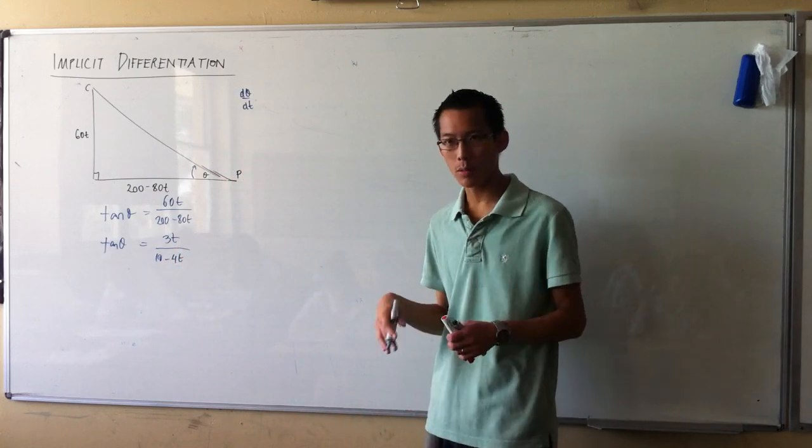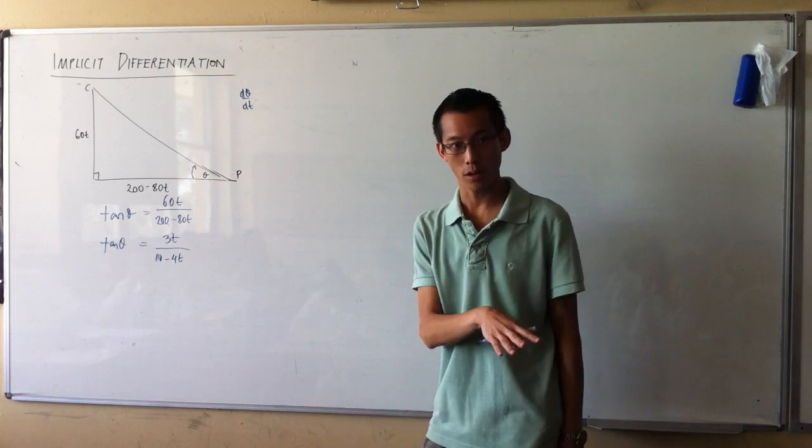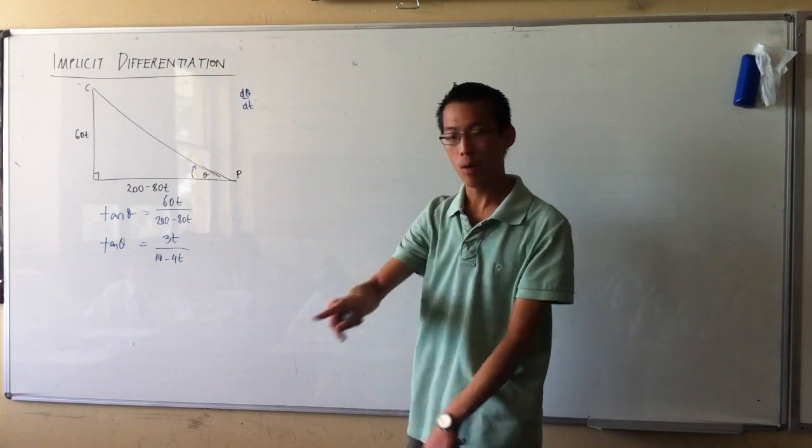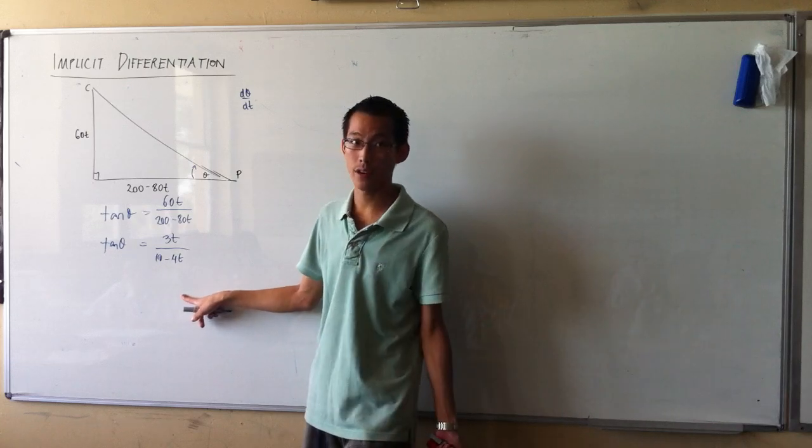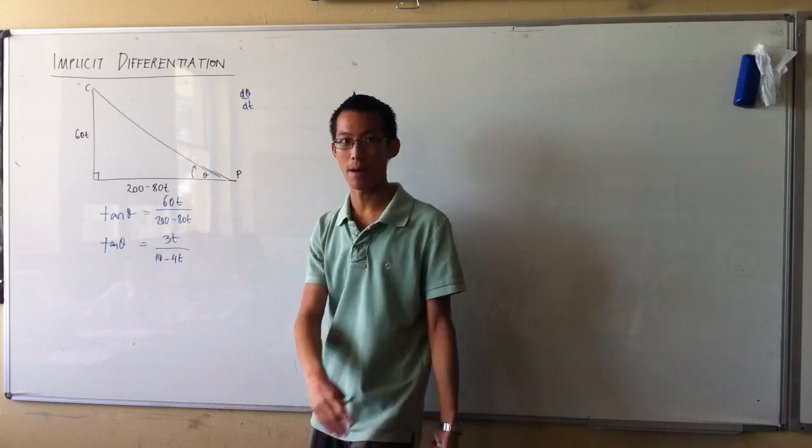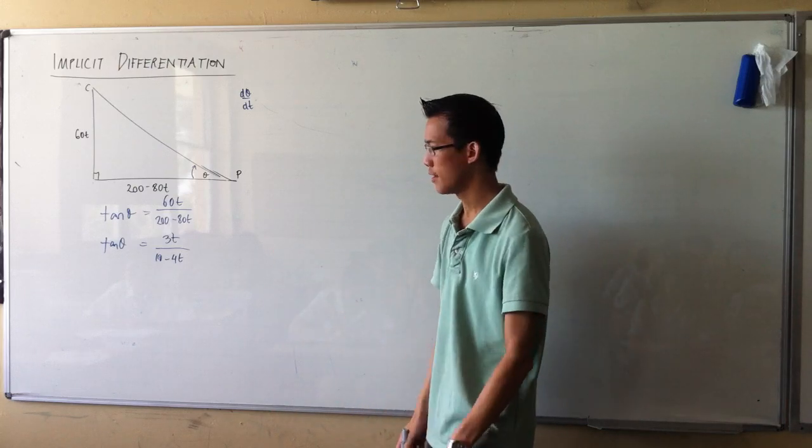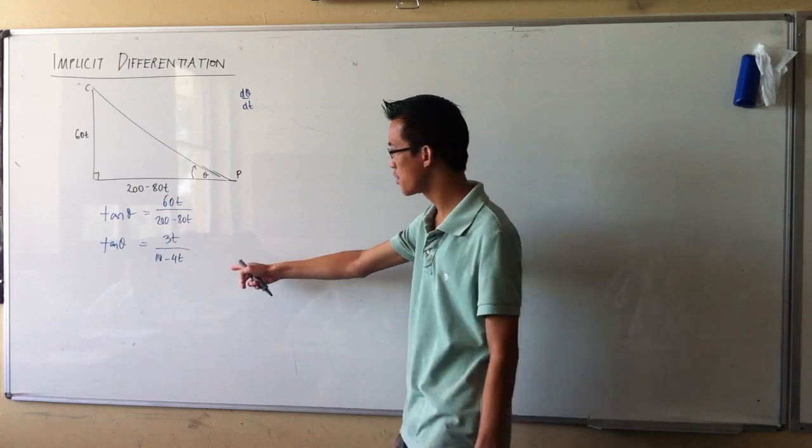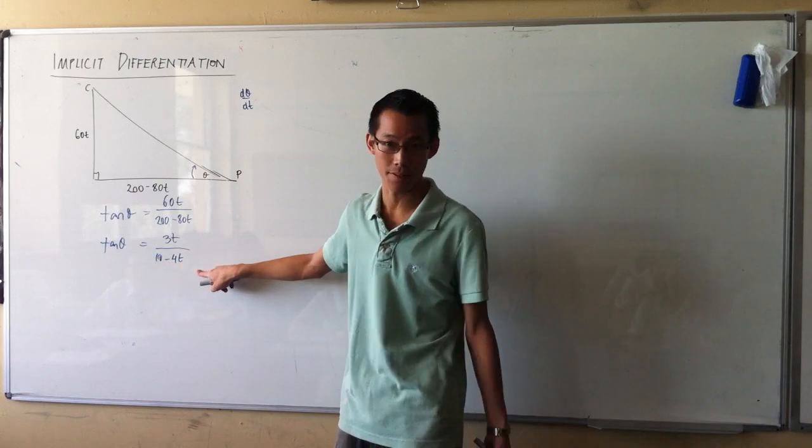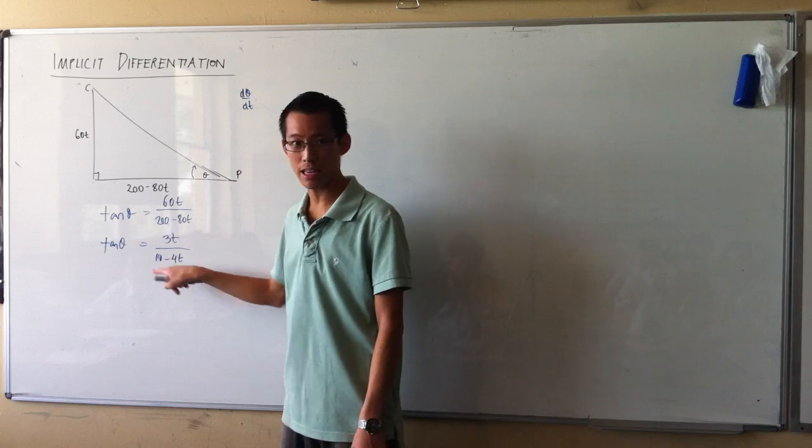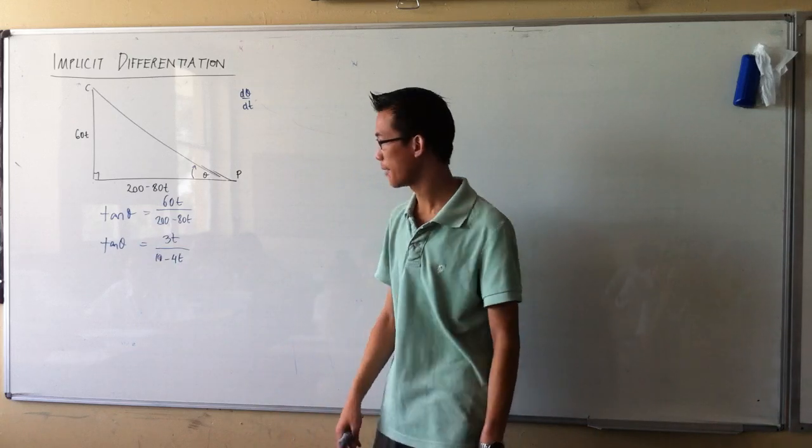Now before, because we wanted to differentiate this and we didn't know what this was, we were forced, just like in our circle example, we were forced to change the subject to theta. That introduced inverse trig, which led us down the guarded path of having to remember our inverse trig's derivatives. But at this point here, can you see, theta and t, this is a function that is implicitly defined. There is a relationship there, it's just I haven't made it obvious by taking tan inverse of both sides.